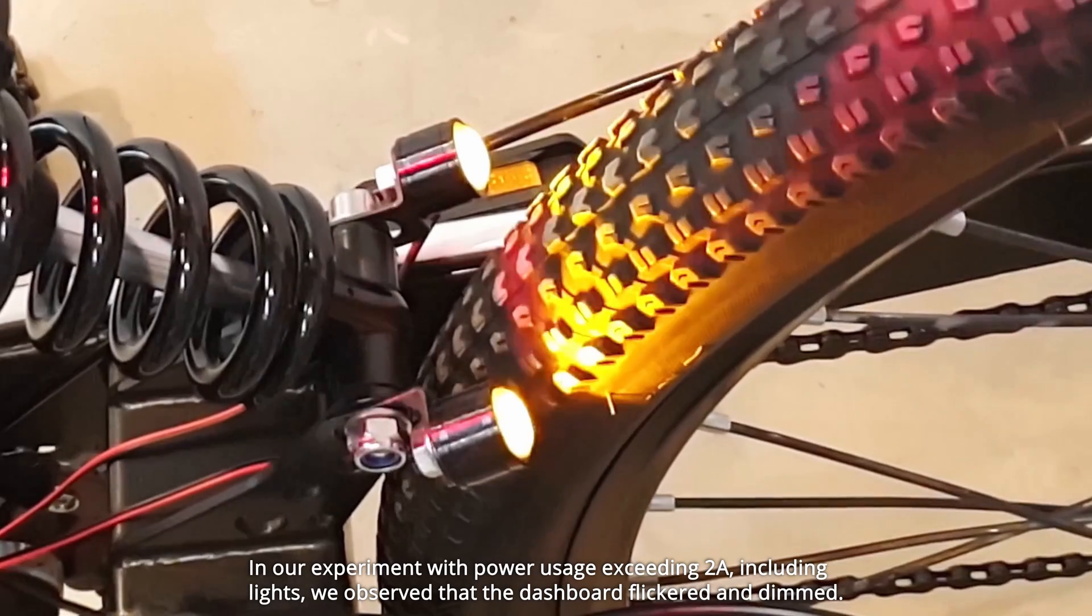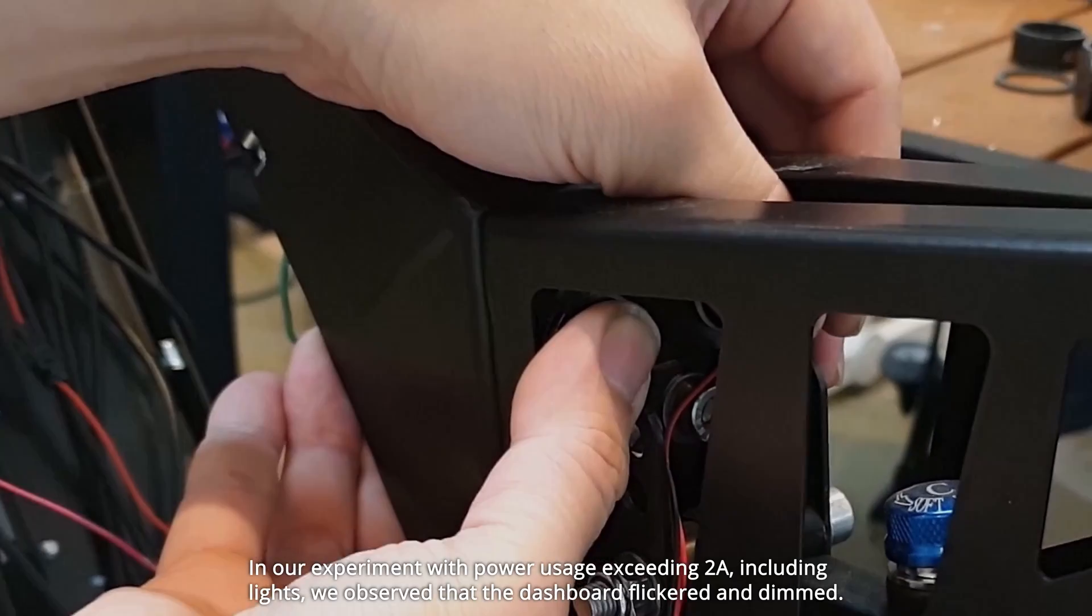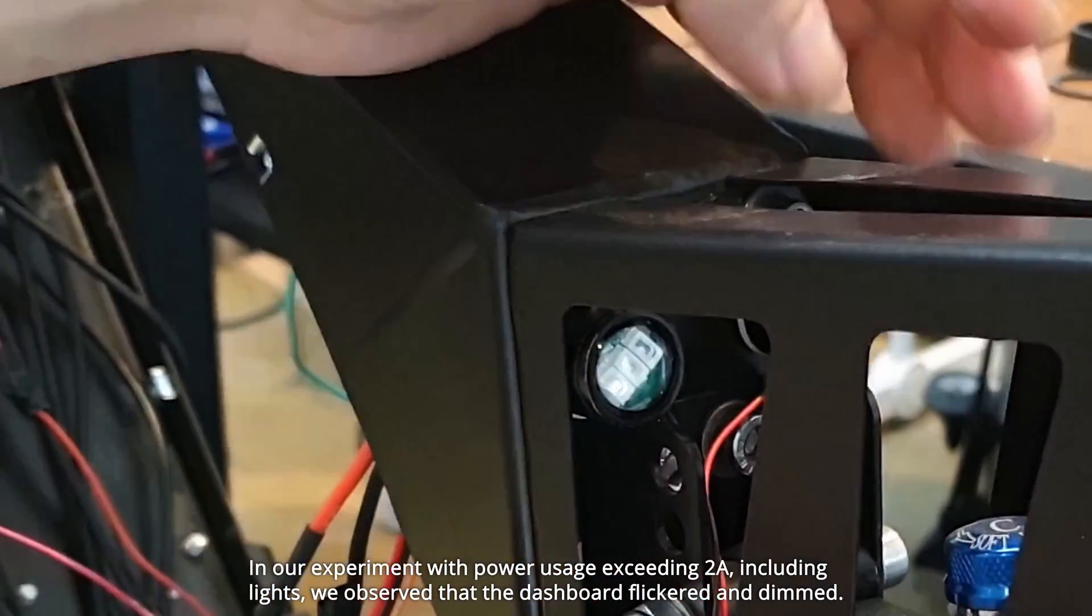In our experiment with power usage exceeding 2 Amperes, including lights, we observed that the dashboard flickered and dimmed.